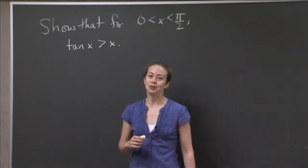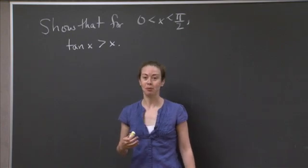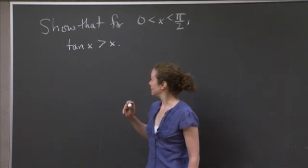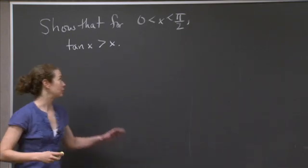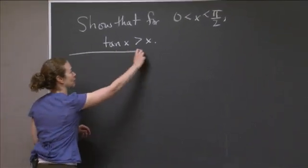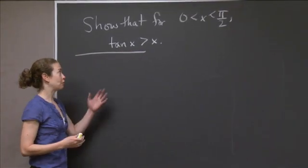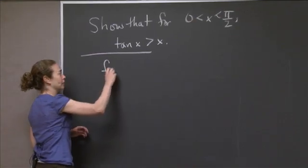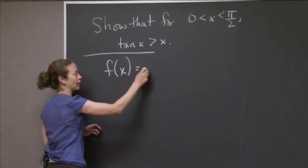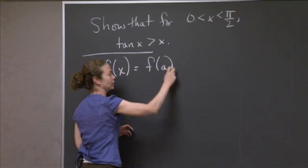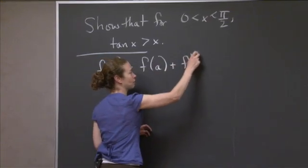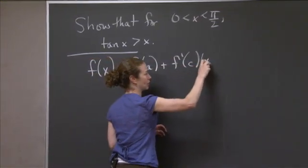OK, welcome back. I'm going to take us through how to do this problem. What I want to do is point out a few things initially. I'm going to remind us of the form of the mean value theorem that we need, which is f(x) = f(a) + f'(c)(x - a).